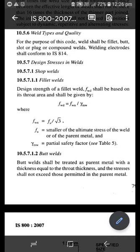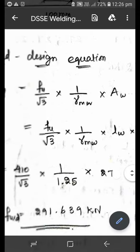I will write this equation in a single form. Strength of the weld fwd = (fu / √3) × (1 / γmw) × area of the weld. See the equation, so I have rewritten that equation as fu / √3 into 1 / γmw into area of the weld.